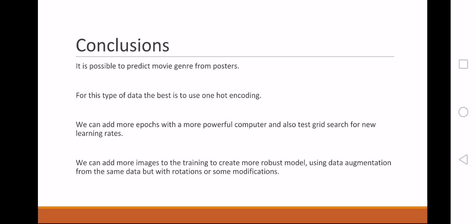The conclusions are that it is possible to predict a movie genre from posters. For this type of data, the best is to use one-hot encoding. If we can add more epochs with a more powerful computer and also a grid search, we would be able to find better results.